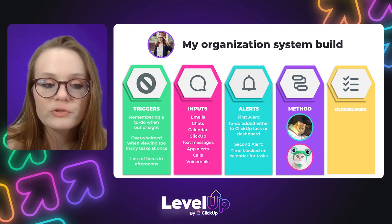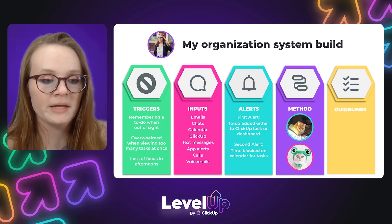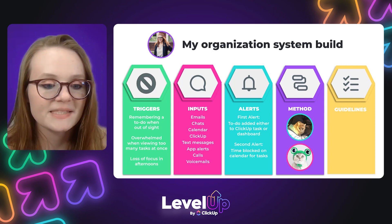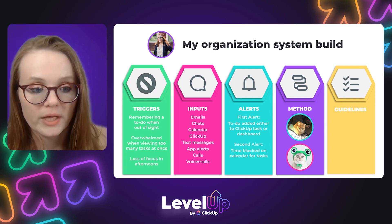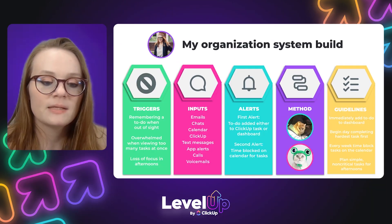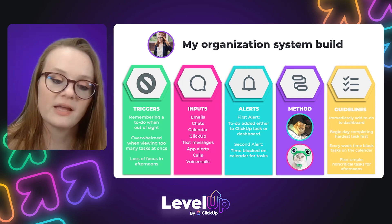You're going to want to discover the methods that closely align with your headspace to help inform your guidelines. My method matches are time blocking and eat the frog because I like to put time on my calendar for tasks and complete the most difficult tasks first thing in the morning. So what does that mean my guidelines look like? I immediately need to add my to-do to my dashboard so I have it tracked somewhere and can turn it into a task later on. I always begin my day completing the hardest task first — that's when I feel the most focused and refreshed. Every Monday, I review all of my major time-consuming tasks and block time on my calendar. And lastly, I plan my simple non-critical tasks like timesheets or administrative tasks for the afternoons.